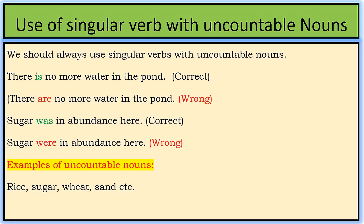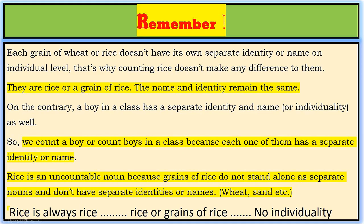Some examples of uncountable nouns are rice, sugar, wheat, sand, etc. Remember, each grain of wheat or rice doesn't have its own separate identity or name on an individual level. That's why counting rice doesn't make any difference — they are rice, or grain of rice. The name and identity remain the same.